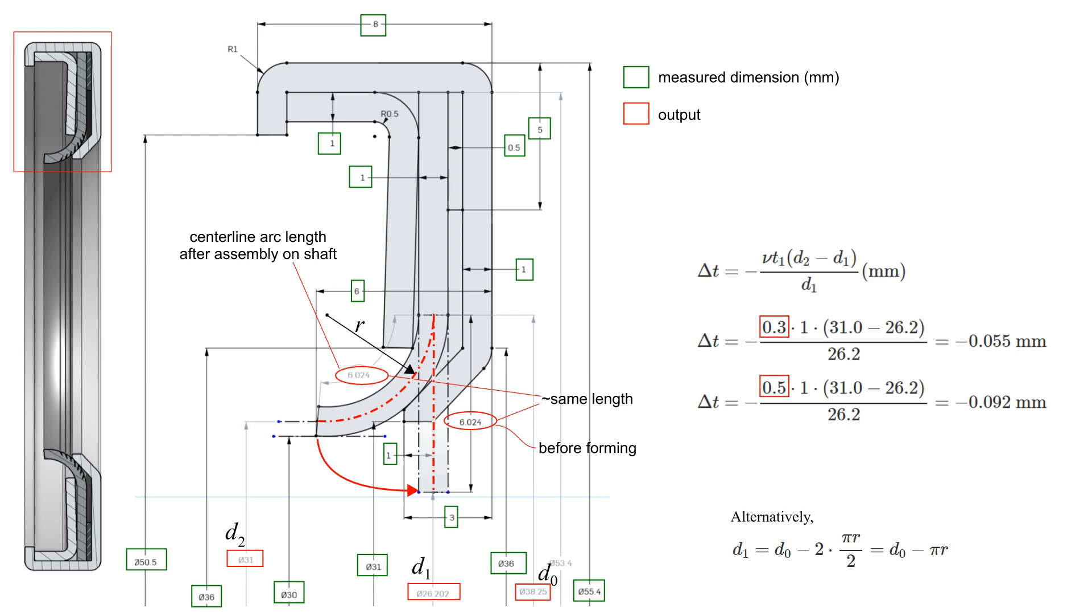Numerically, assuming an initial lip thickness of one millimeter, isotropic material behavior, and a Poisson ratio between 0.3 and 0.5, this results in a thickness decrease between 55 and 90 microns.